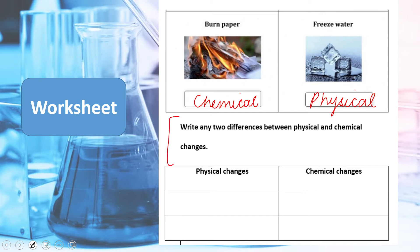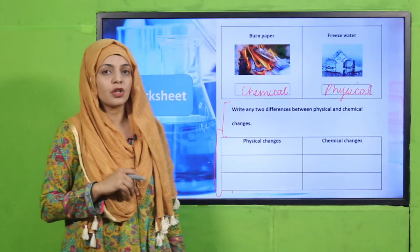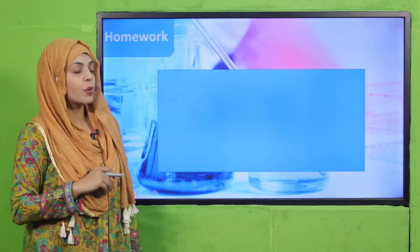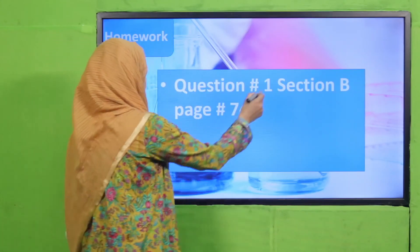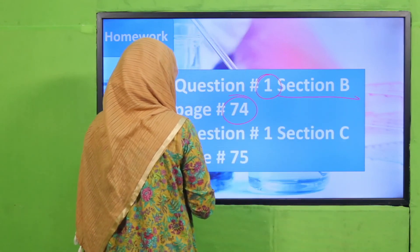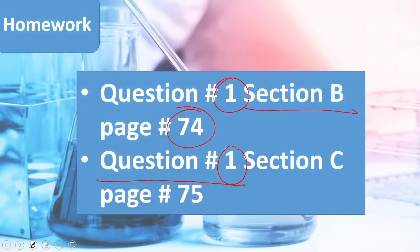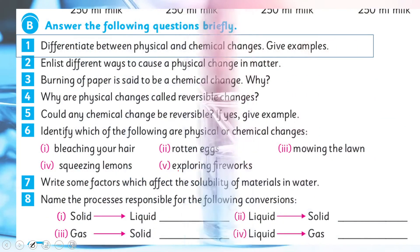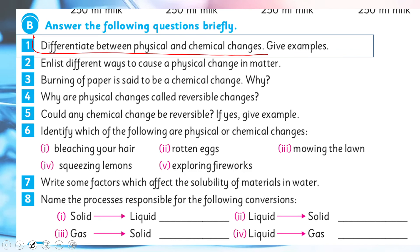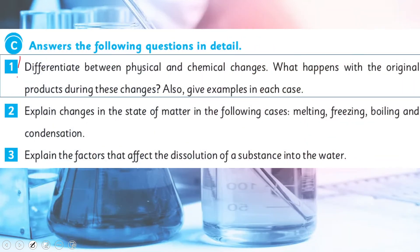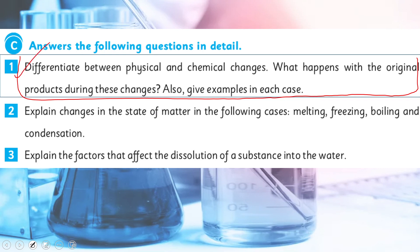Next, write two differences between physical and chemical changes — you can take help from the book. Complete the worksheet, then we move to homework. For homework, do question number one from section B on page 74, and question number one from section C on page 75. Section B: differentiate between physical and chemical changes and give examples. Section C: explain what happens with the original product during these changes, with examples. Aapne dono questions apne notebook mein karne hain as your homework.